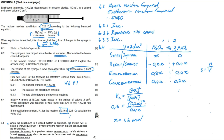Marking guidance for Le Chatelier's principle: the underlined segments must be present to earn marks. First mark: 'when the equilibrium in a closed system is disturbed, the system will reinstate a new equilibrium.' Second mark: 'by favoring the reaction that will oppose the disturbance.' For question 6.2: one mark for stating the forward reaction is endothermic, one mark for noting the reverse reaction is favored because the syringe turns colorless, and one mark for linking this to Le Chatelier's principle showing the exothermic reaction is favored when cooled.